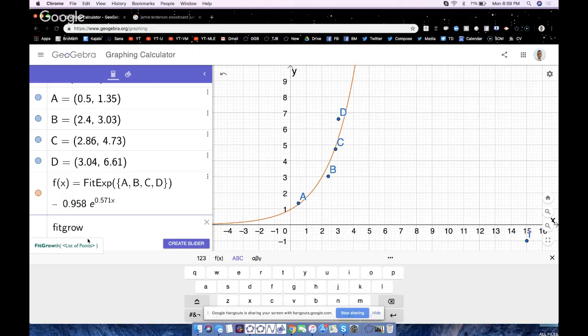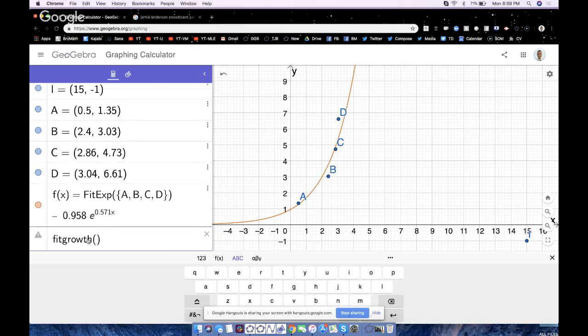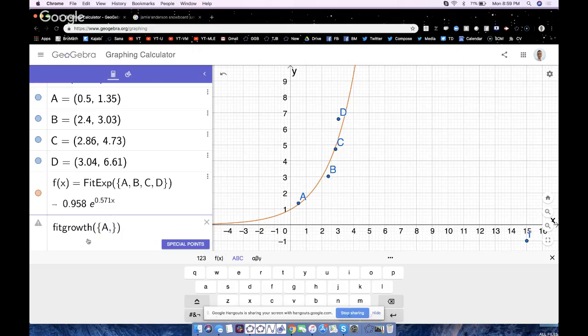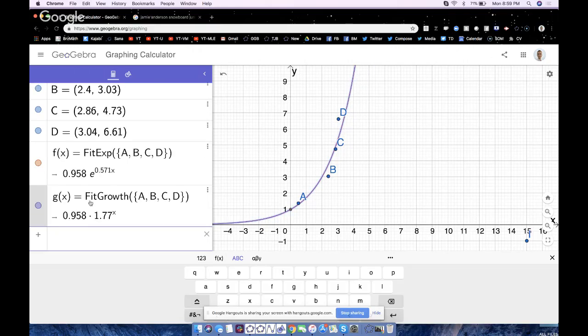If I use fit growth, that makes an exponential fit that whose base is not E, like your typical A times B to the X. Like such there. A, B, C, and D. But those models are definitely equivalent. And, you know, if you take the time to do so, you can prove it.